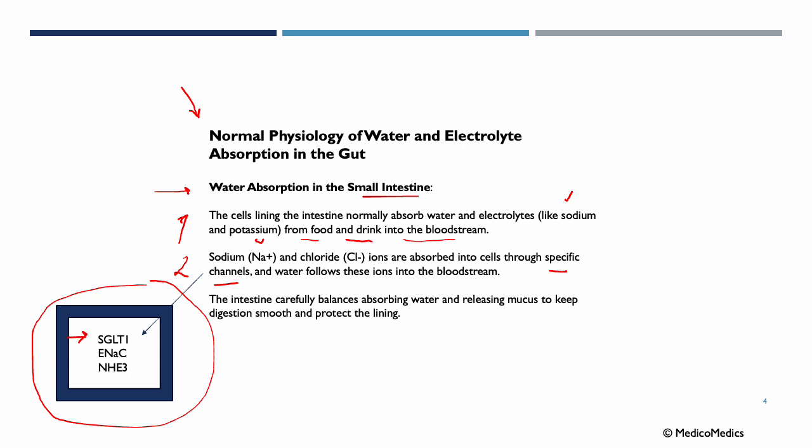SGLT1, or sodium-glucose co-transporter 1, actively transports sodium along with glucose from the intestinal lumen into enterocytes. ENaC, the epithelial sodium channel, facilitates sodium absorption especially in the distal colon. NHE3, the sodium-proton exchanger, exchanges luminal sodium for intracellular protons, aiding in sodium absorption.